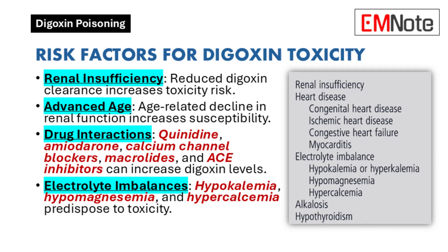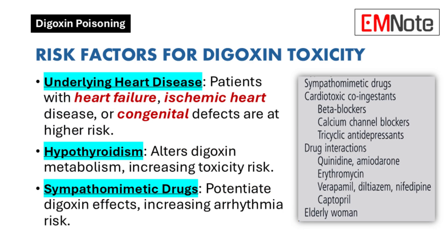Electrolytes play an important role in digoxin toxicity risk. Hypokalemia enhances digoxin's effects and increases the risk of toxicity — this is particularly important in patients taking diuretics, which often deplete potassium. Hypomagnesemia also predisposes to digoxin toxicity, and hypercalcemia can contribute as well. Electrolyte imbalances can significantly impact digoxin's effects.